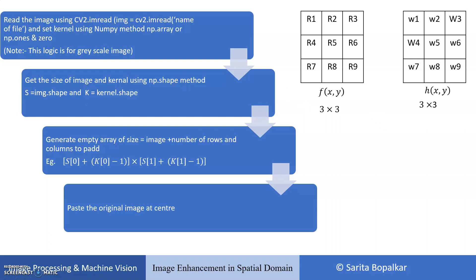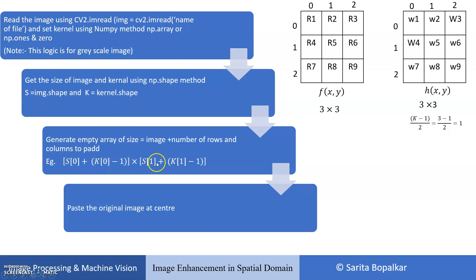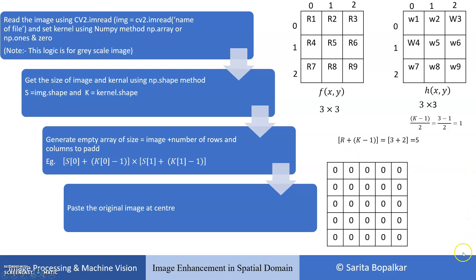Image size is 3x3, kernel is 3x3. While developing the code, remember that indexing for rows and columns will start from 0. Next, generate an empty array of size: image rows plus padding rows and image columns plus padding columns. The mathematical equation is: s[0] + k[0] - 1 for rows, and similarly for columns. k-1 because we are adding rows above and below, and columns left and right. We have generated this empty mask. The last step is to paste the original image at the center of this empty mask, and automatically you will find your image with the padded zeros.